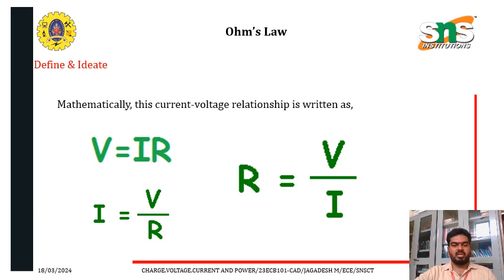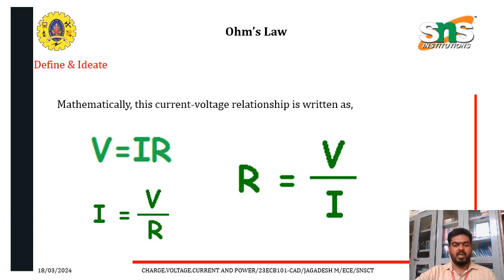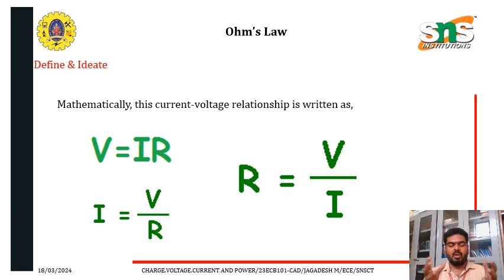At a constant temperature, voltage is directly proportional to current, as represented mathematically by V = IR. From this relationship, we can determine current as I = V/R and resistance as R = V/I. Not only that, we can also find out the power value. Power equals V times I in terms of voltage and current. In terms of current only, P = I²R, and in terms of voltage only, P = V²/R. The origin of these power equations comes from Ohm's law: V = IR.